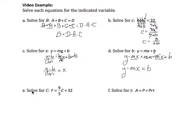Part E, I'm asked to solve for C given F equals 9 fifths C plus 32. So C is here. I'm going to start by subtracting 32 from both sides. So F minus 32 equals 9 fifths C. I want C by itself. I have 9 fifths C.